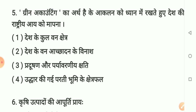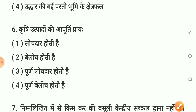Question number 5: Green accounting ka arth hai ki praakritik sanpadaon ko dhyan mein rakhte hue desh ki rashtriya aay ko maapna. Option 1 - desh ke kul kshetra. Option 2 - desh ke acche din ka vinaas. Option 3 - pradooshan aur paaryavaraniy chhati. Option 4 - uddhaar ki gayi parti bhoomi ke kshetrafal. Sahi answer hai option 3: pradooshan aur paaryavaraniy chhati. Yaad rakhiye.